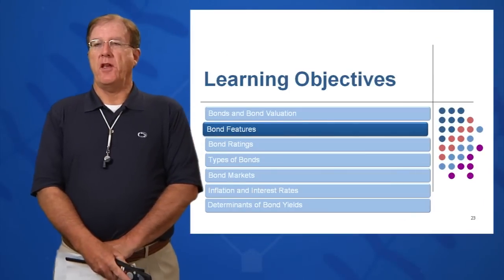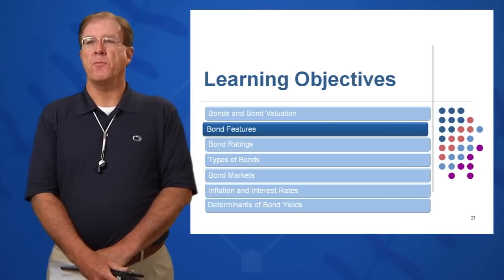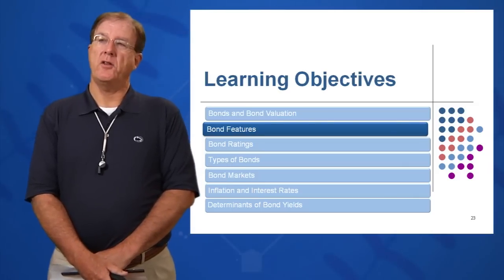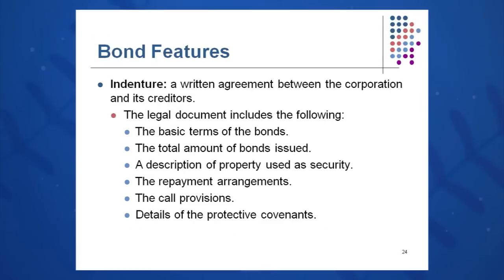The second learning objective in session seven is features of bonds. Bonds have a rich lexicon and set of terminology we need to understand. When you buy a bond, you will get and sign an indenture — a written agreement between the corporation and you, the lender. It is the legal document that explains the terms of the bonds: the total amount issued, description of any property used as security or collateral, repayment arrangements, any call provisions, and protective covenants protecting you, the investor.